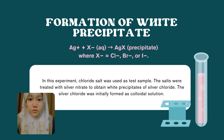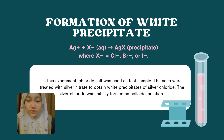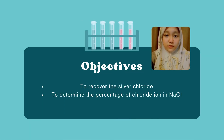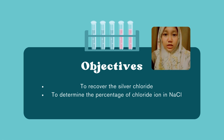In this experiment, a chloride salt was put to the test. The salt is treated with silver nitrate to form a white precipitate of silver chloride. Silver chloride forms a colloidal solution. The objective of this experiment is to recover the amount of sodium chloride and to identify the percentage of chloride ions in sodium chloride.